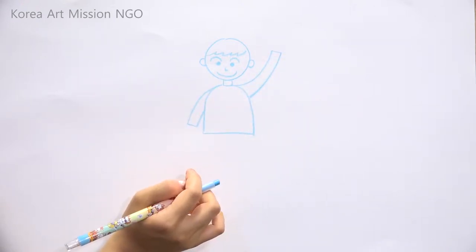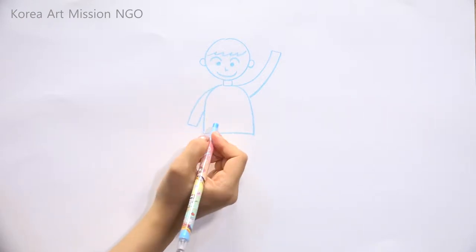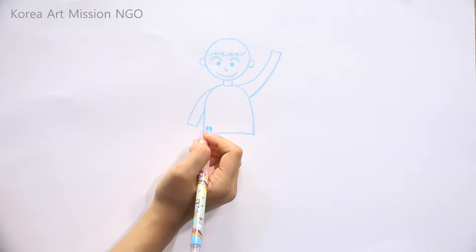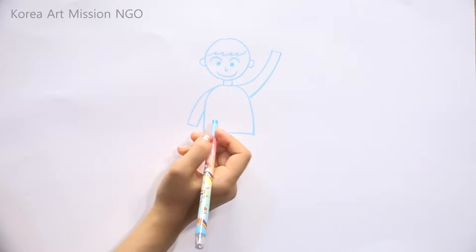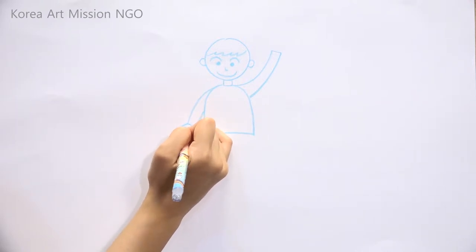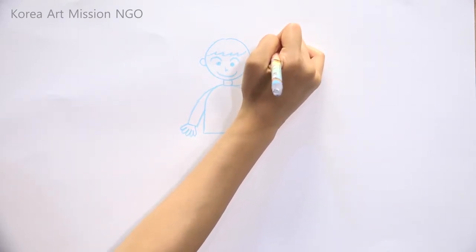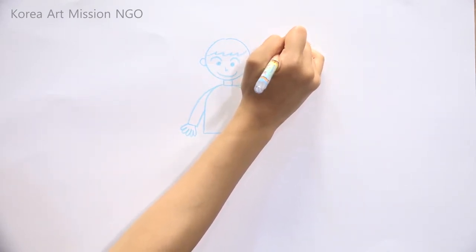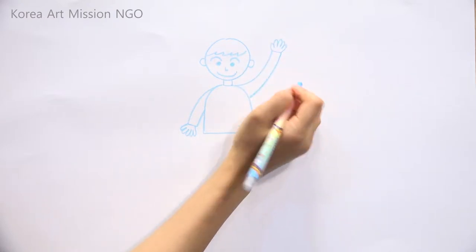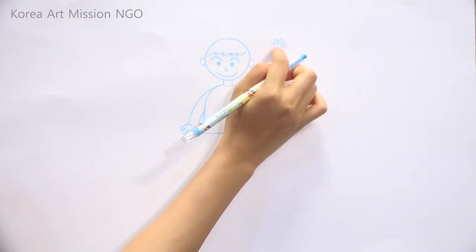It's time to draw both hands. Last time I showed you an easy way, but this time I'll tell you how to draw them all at once. One, two, three, four, and five. Then this side: one, two, three, four, and five. You can draw them with the same length as your fingers.